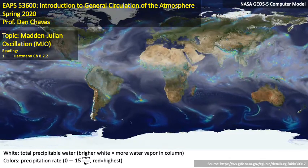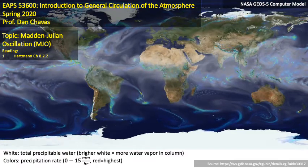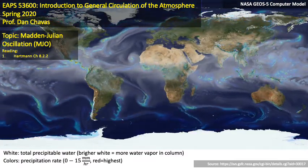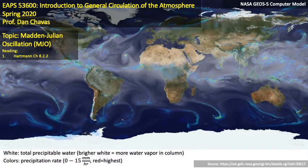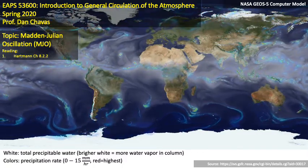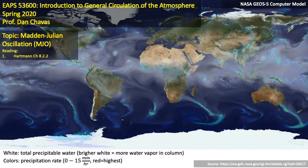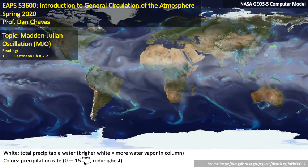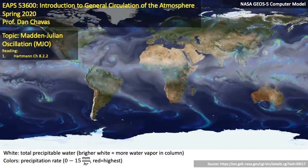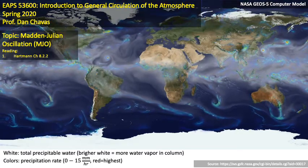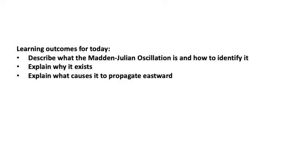This is the next virtual lecture for EAPS 536. The topic will be the Madden-Julian oscillation, often shortened as the MJO. In the reading there's a couple pages on the MJO in Hartman chapter 8.2.2. Learning outcomes for today: first, describe what the Madden-Julian oscillation is and how to identify it; second, explain why the MJO exists; and third, explain what causes it to propagate eastward.